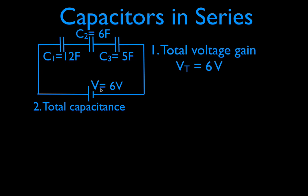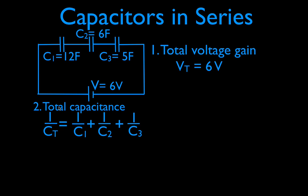Now for the total capacitance — we have capacitors in series, not capacitors in parallel. If these were capacitors in parallel, then we would simply add up 12, 6, and 5 and get 23. But we have capacitors in series, so we must use what I like to call the 1-over equation. The equivalent capacitance is found from: 1 over C_eq equals 1 over C1 plus 1 over C2 plus 1 over C3. You don't add them up — that's parallel capacitors. For series capacitors, we use this equation.